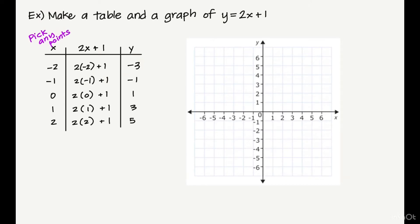So there we go. Now I can plot all my points. Negative 2, down to negative 3. Negative 1, down to negative 1. Zero, up 1. One, up 3. And 2, up 5. And now I can connect all of my points and draw a straight line with my ruler. This is representing this function.